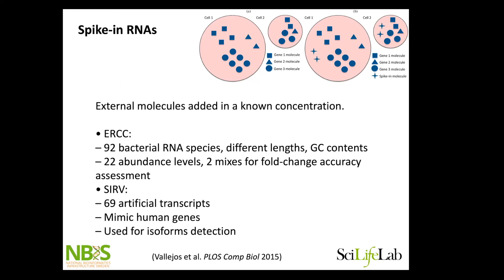The spike-ins have different concentrations and different lengths. Another kit is called CIRB, which is fairly similar. The idea is that if you compare two cells and only do count normalization, they would look identical — you have the same proportions of these three different genes expressed. But if you add in the spike-in, you can say something about the relative abundance.